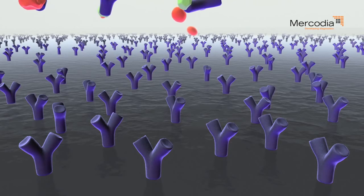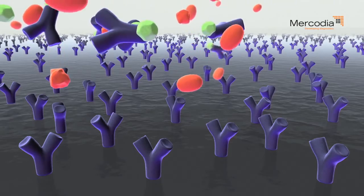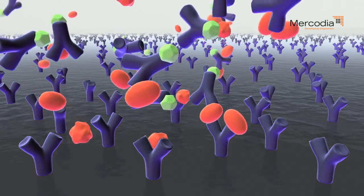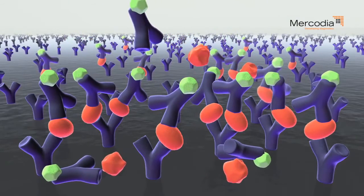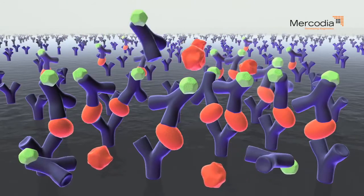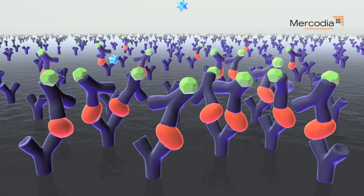The sandwich ELISA may also be constructed as a simultaneous assay where the sample and the detection antibody are added in the same step. After a washing procedure, the substrate is added.